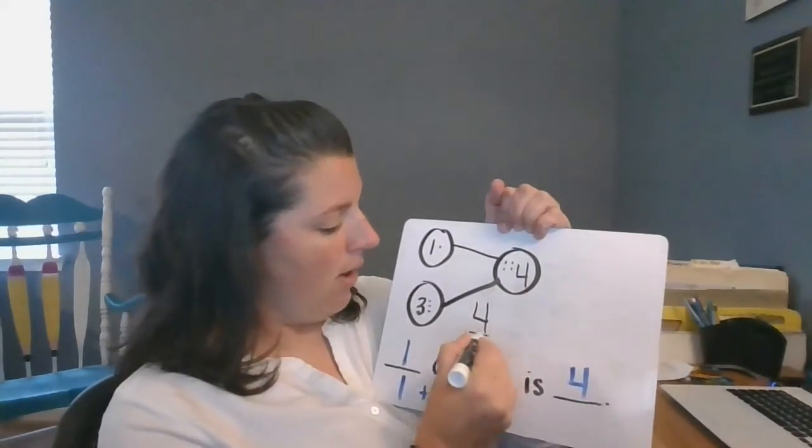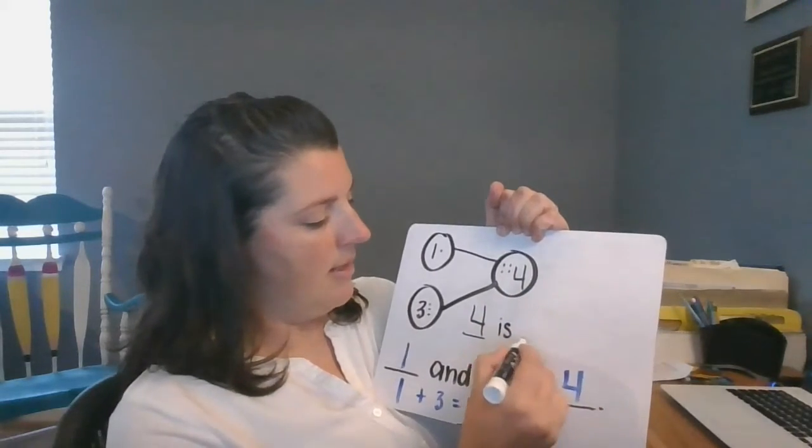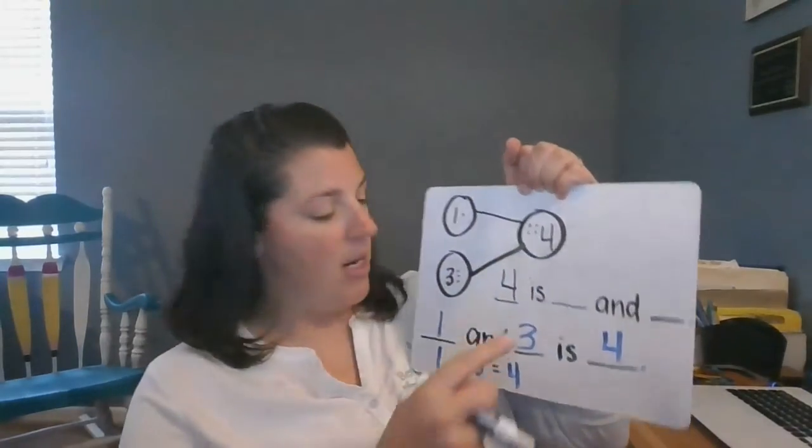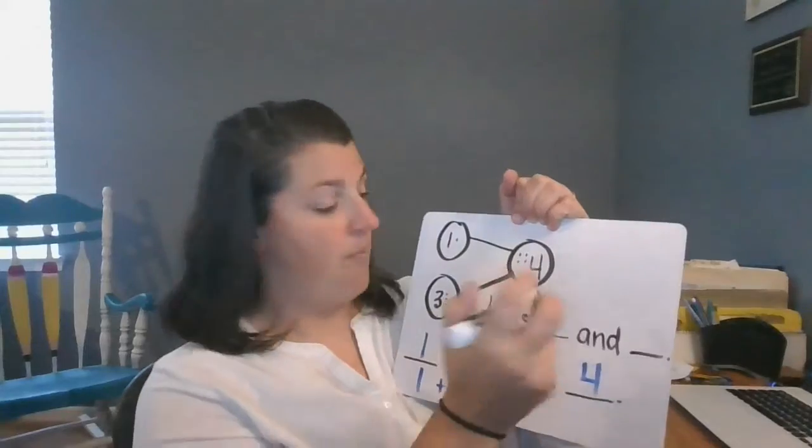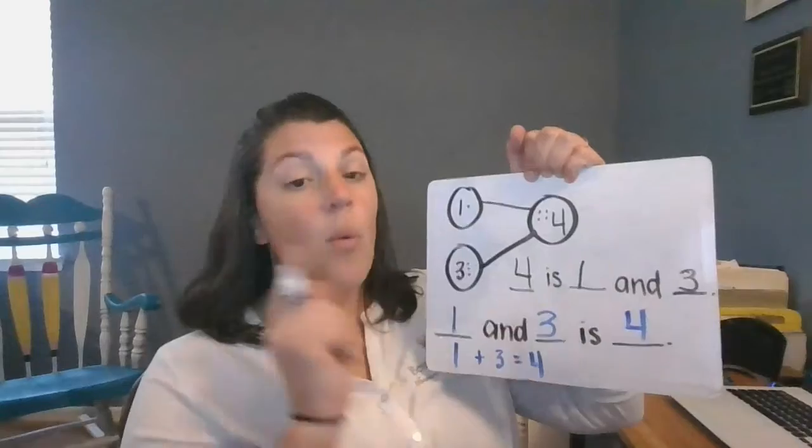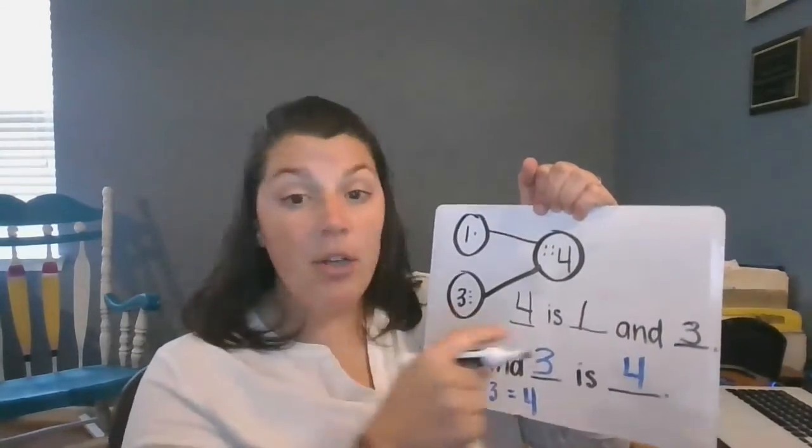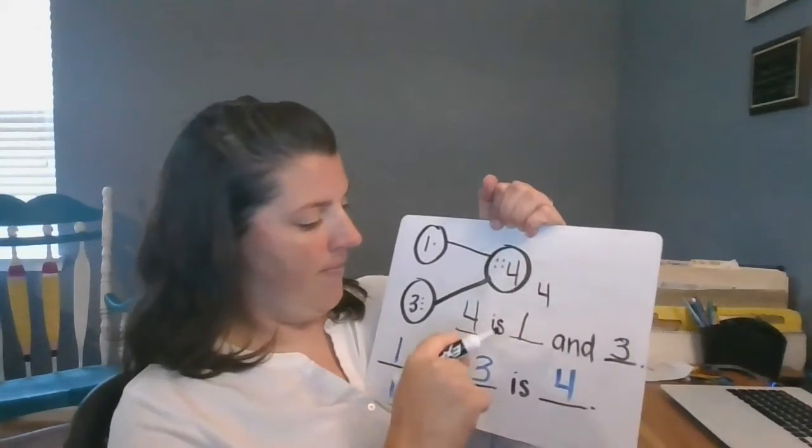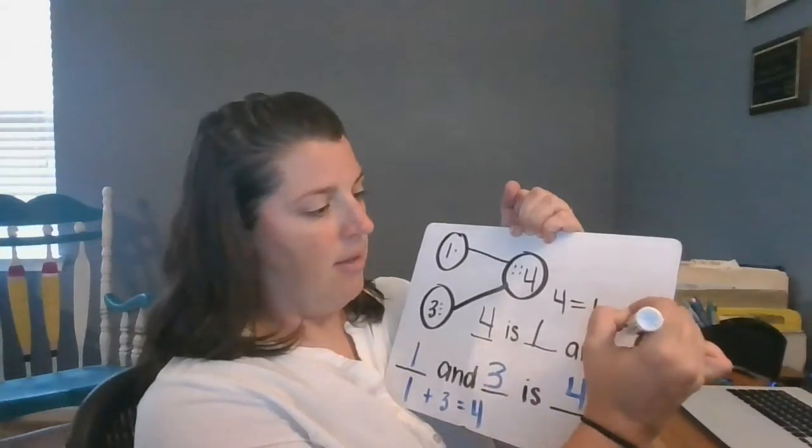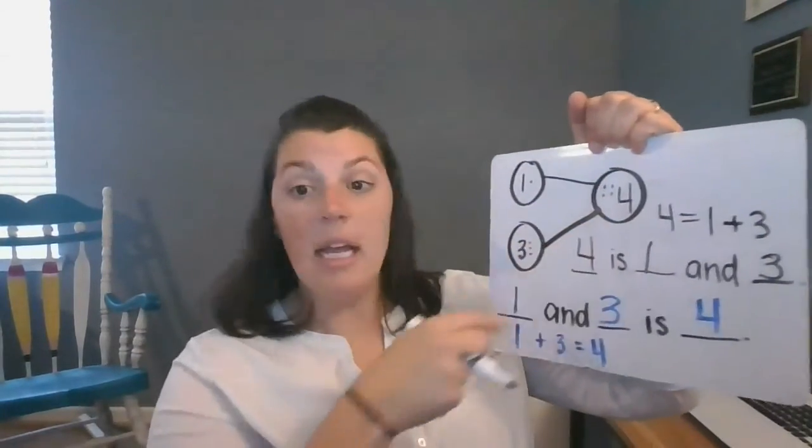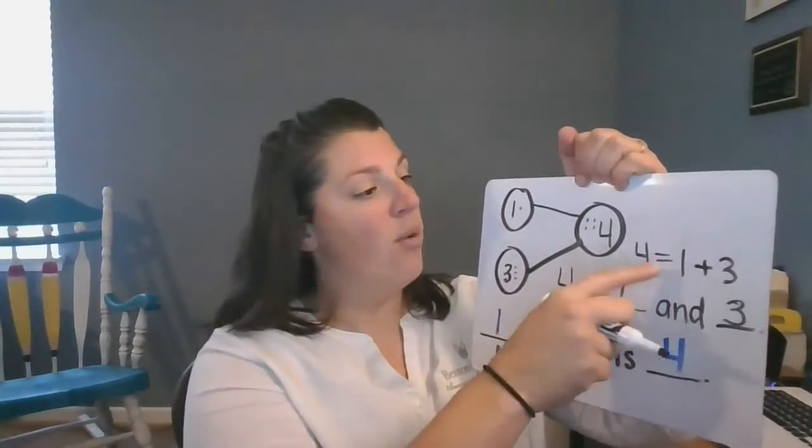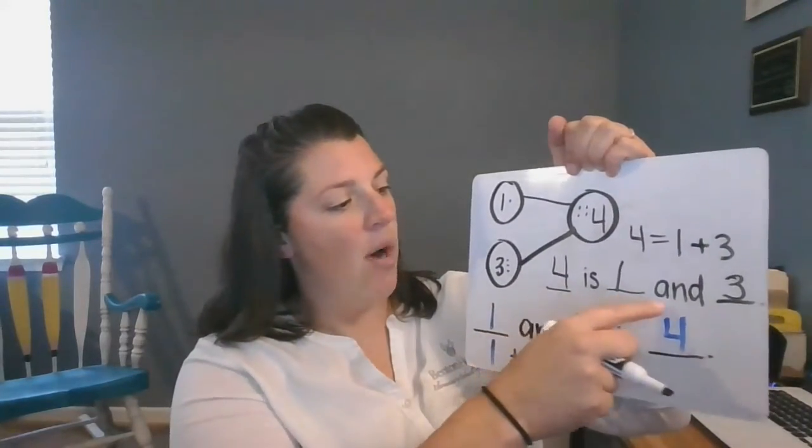So I could say four is blank and blank. So what would go here? Four is one and three. We have to pay really close attention. I could even write that as an equation. Four equals one plus three. I can say it all these different ways. Four equals, four is the same as one and three. Four equals one plus three. Four is one and three.